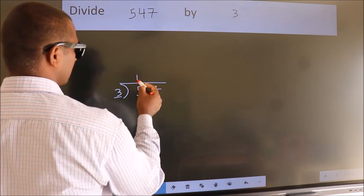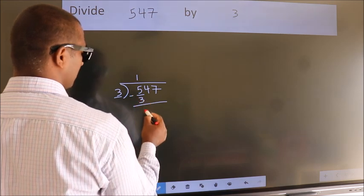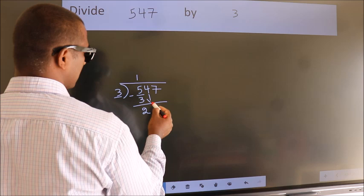Now we should subtract, we get 2. After this, bring down the beside number, so 4 down, so 24.